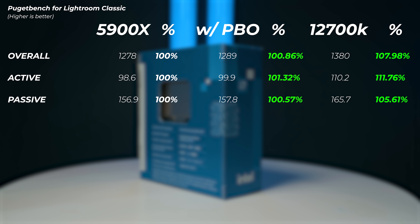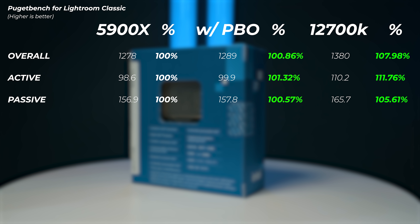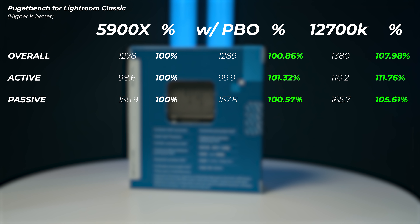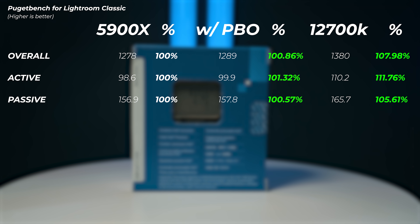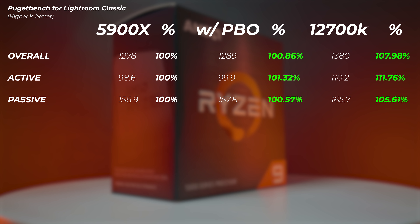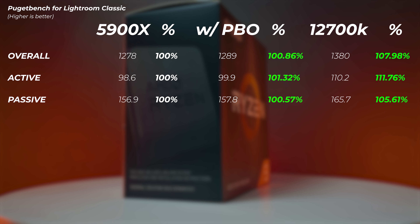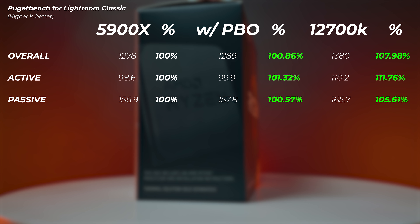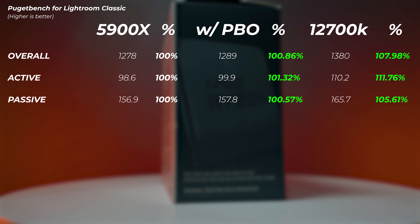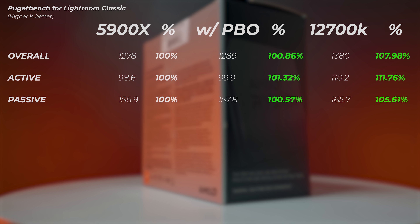In Lightroom Classic, enabling PBO gains only 0.8% — not really significant. The 12700K is about 8% faster in the overall score. The active score — representing single-core performance when working with photos — is 11.8% faster on Intel. The passive score, representing multi-core performance, is still 5.6% faster on the 12700K, which is very impressive.